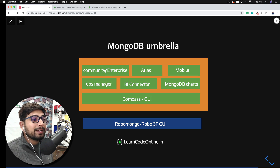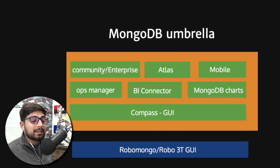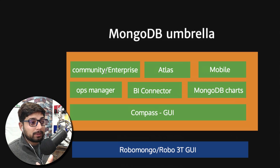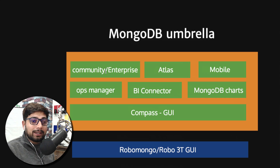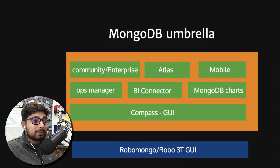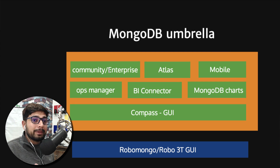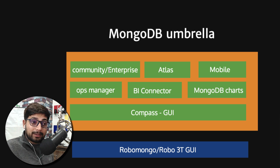First and foremost, we have the Community Edition or the Enterprise — this is our actual database on which we will be working, and this is why MongoDB is so popular. It comes in two flavors: the Community Edition, which is totally free — just install it on your computer or servers wherever you like. There is also an Enterprise Edition for big-scale applications, for those who don't want to deal with all that setup themselves.